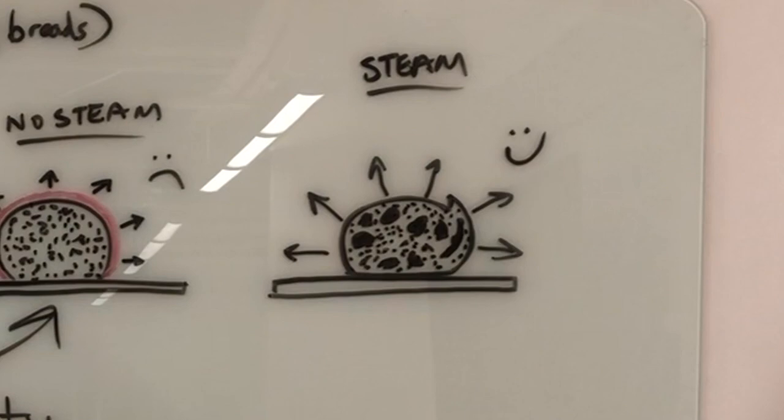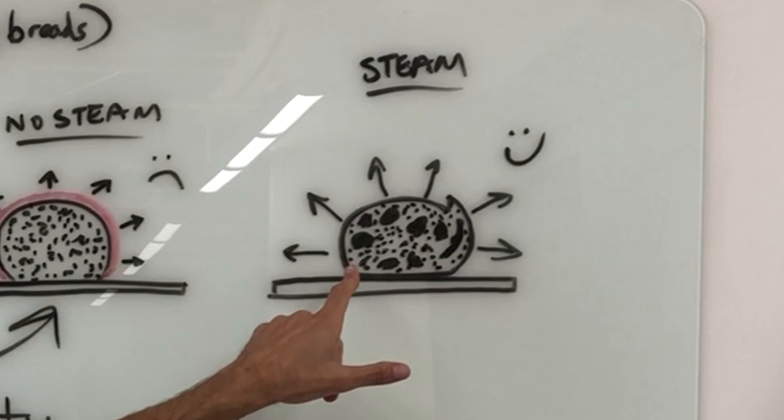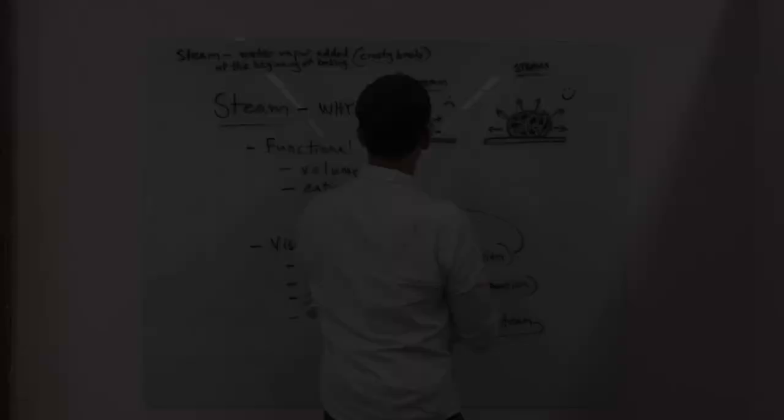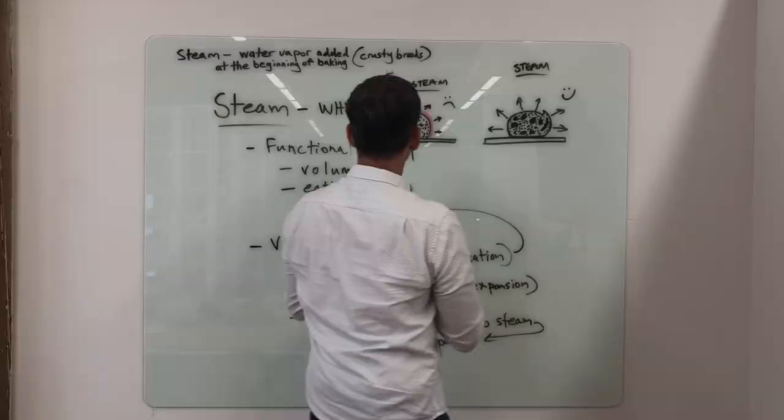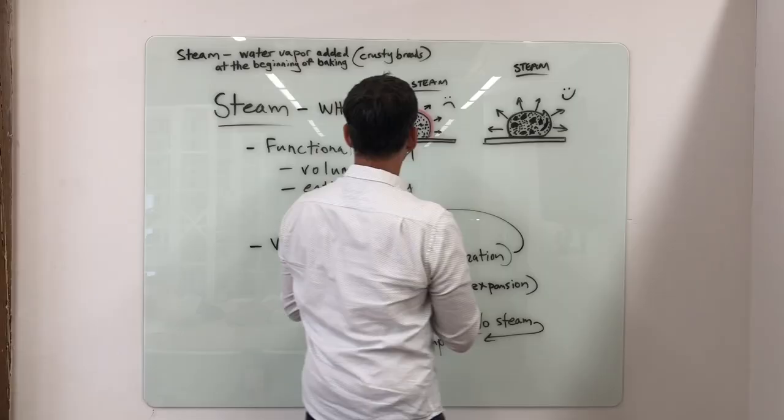After volume, other impacts include eating quality. Baking in a steamy environment results in a thinner, crisper crust. The crust stretches and stretches and thins and then eventually sets. It also leads to an improved interior structure.